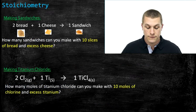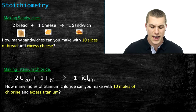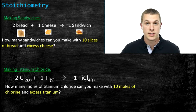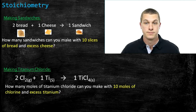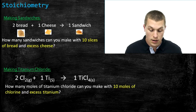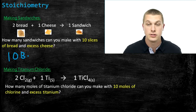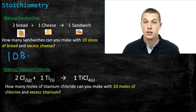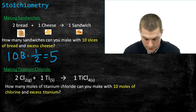Our question asks: how many sandwiches can you make with 10 slices of bread and excess cheese? The 'excess cheese' part is important — it means you have plenty of cheese and don't need to worry about it. Stoichiometry problems at first consider just one ingredient. In this case, cheese won't run out, so all we think about is bread. With 10 slices of bread, we divide by the two slices needed per sandwich — multiplying by one over two — giving us five sandwiches.